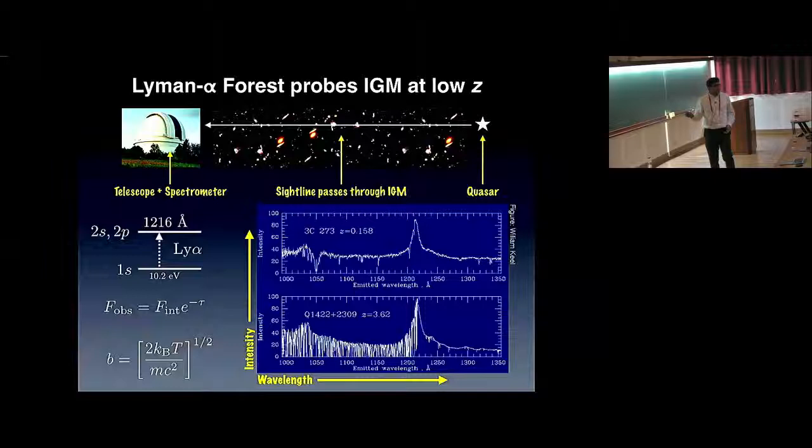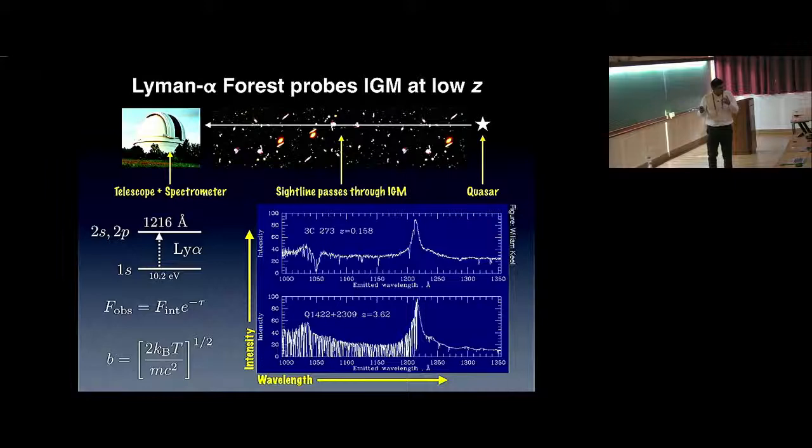It's very well known that the structure of the Lyman-alpha forest evolves with redshift. These two quasars already serve as an example: one's at redshift 0.158, this one's at redshift 3.62, very different redshifts. The overall continuum spectrum looks remarkably similar, but the Lyman-alpha forest is very different. What was realized in the last three or four years is that the Lyman-alpha forest structure also evolves in space at a fixed redshift. There are spatial fluctuations in the Lyman-alpha forest.